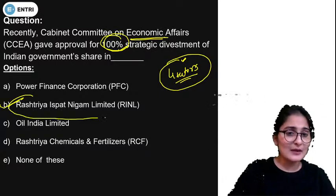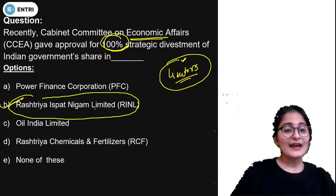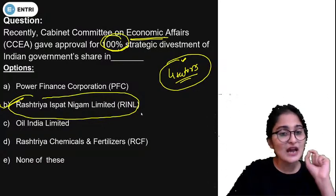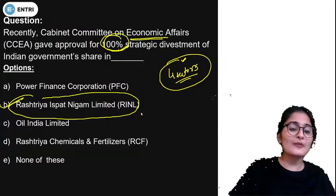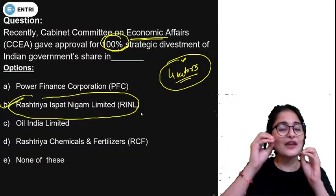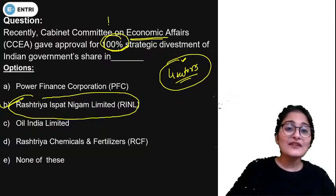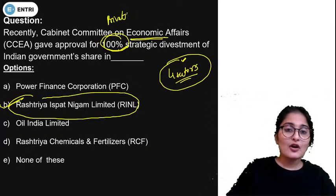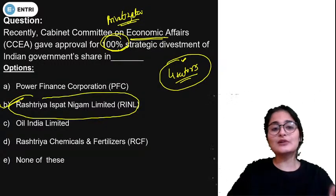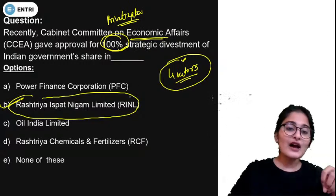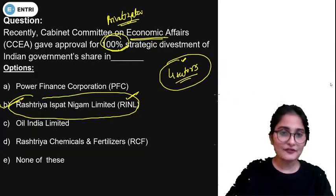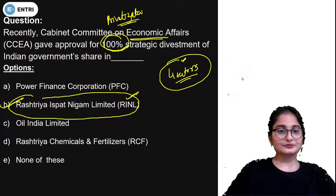The answer is Rashtriya Ispat Nigam Limited, or RINL. RINL is one of those companies in which 100% strategic disinvestment has been announced — the Indian government is going to completely sell all of its shares, which is complete privatization. It has been approved by CCEA, the Cabinet Committee on Economic Affairs.